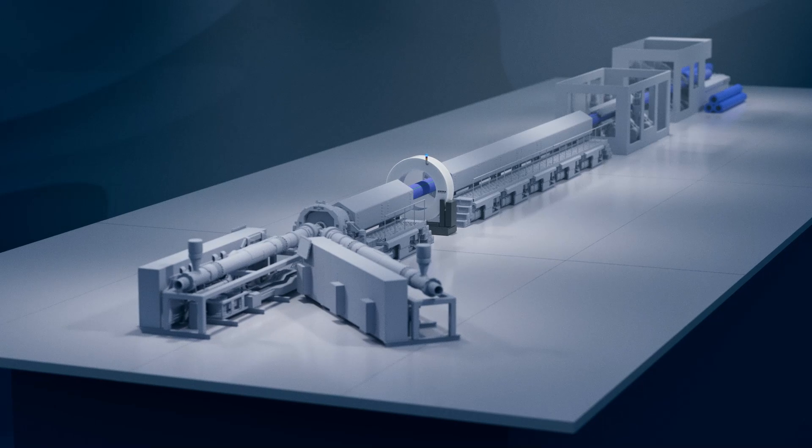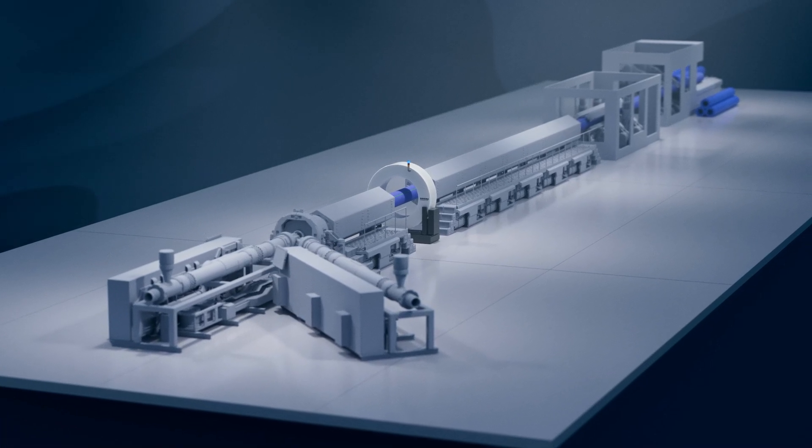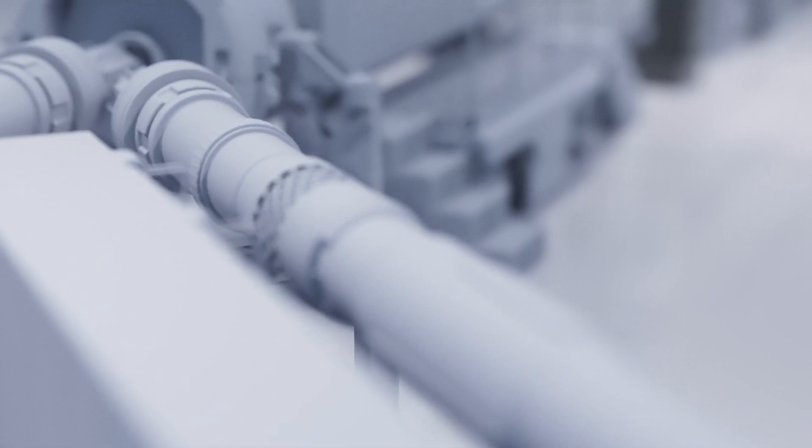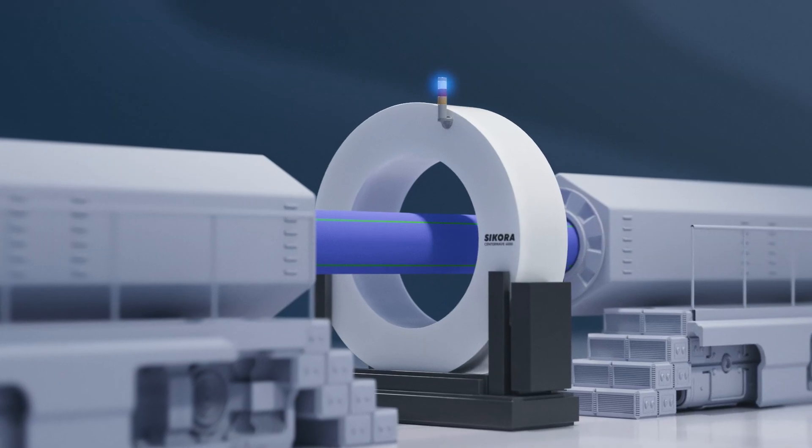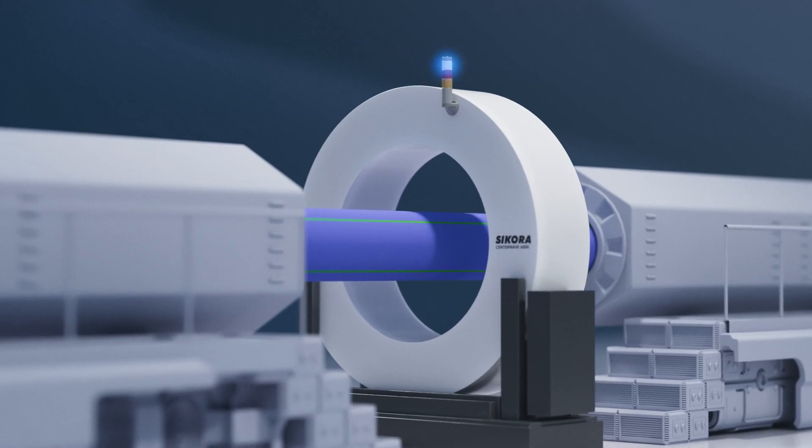The use of a high-precision inline system for the measurement of all product dimensions and subsequent control of the minimum wall thickness is essential. In comes the Sikora CenterWave 6000.